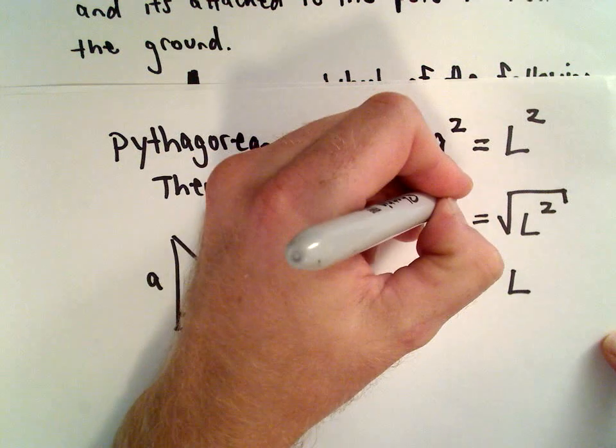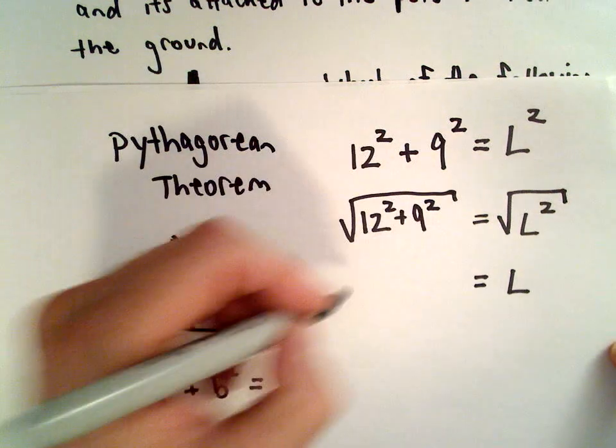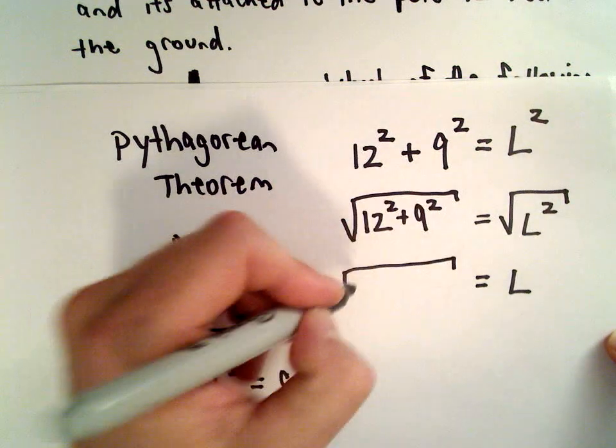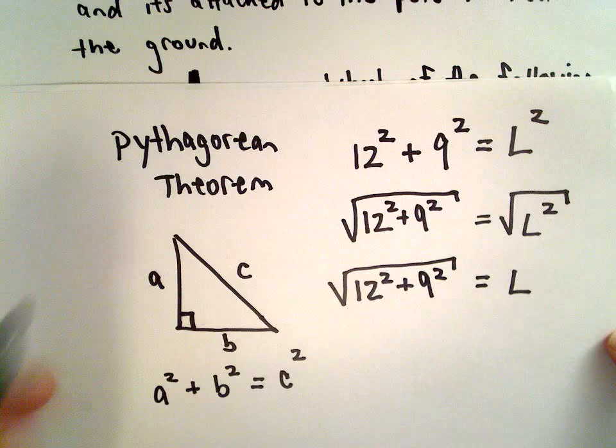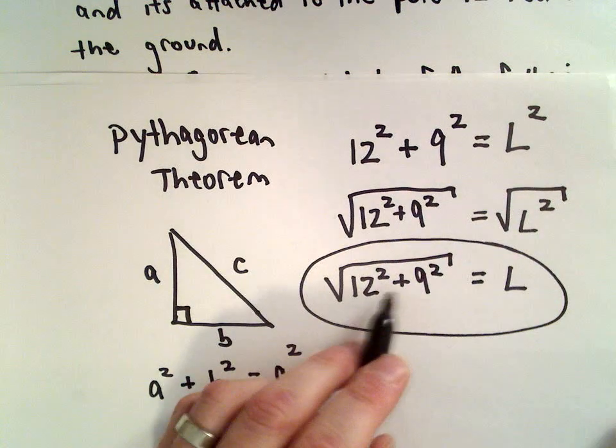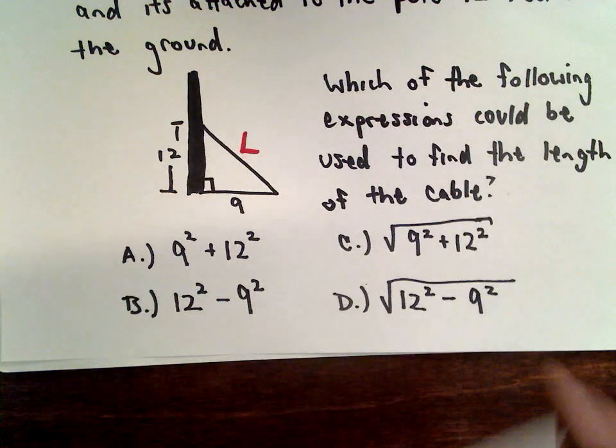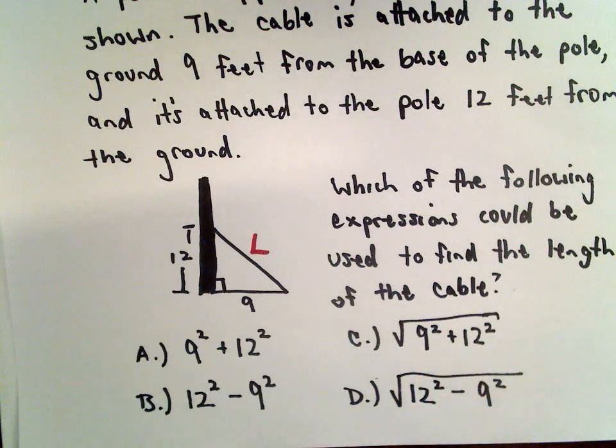That means we also have to take the square root of the left side. In this case, we don't even have to simplify it. We can just leave it in that form. So the length is going to be equal to the square root of 12 squared plus 9 squared. Equivalently, you can write that as the square root of 9 squared plus 12 squared.